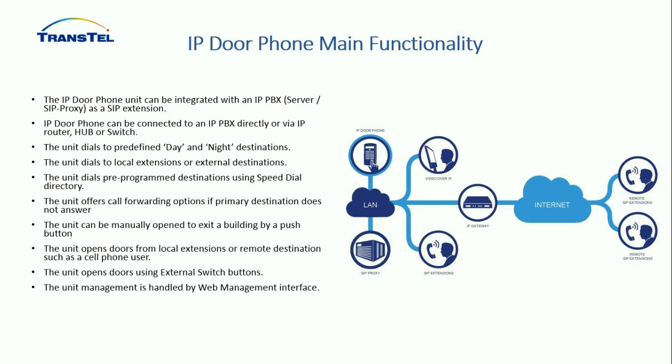Importantly, the IP3940 series phones do not need a soft switch, soft PABX, or hosted cloud solution to operate. In a closed network environment within a building, phones can use their address books to individually call and communicate directly with other devices — IP phones, endpoints, IP3970 panel tablets in apartments — all directly without a PABX. However, for more management, manipulation of calling patterns, and advanced features, that's when you'd introduce a soft switch. Connect directly to a PABX via hub, router, or switch. The unit dials predefined day and night destinations automatically, and dials both local and external extensions regardless of the digit length.